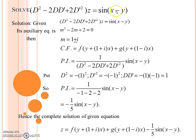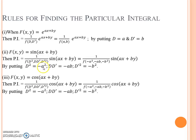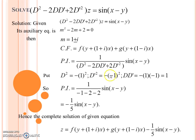For PI: since f(x, y) is of the form sin(ax + by), we put D² = −a², DD' = −ab, and D'² = −b². We get PI equal to −(1/5) sin(x − y). Therefore the complete solution is z equal to CF plus PI. Thank you for watching the video.